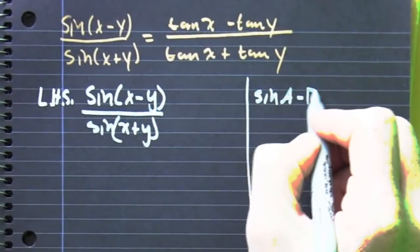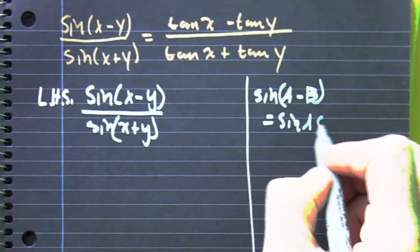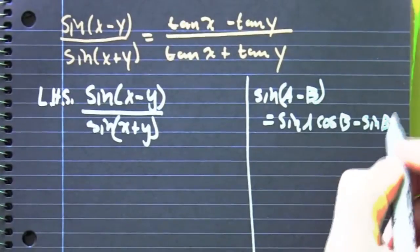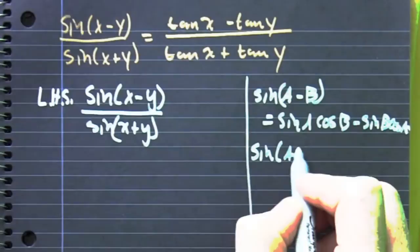We rewrite the left hand side because we're not lazy. Sine of x minus sine of y divided by the sine of x plus sine of y. Then we're expanding out the sine of a minus b. That's going to be sine of a cosine b minus sine of b cosine a.